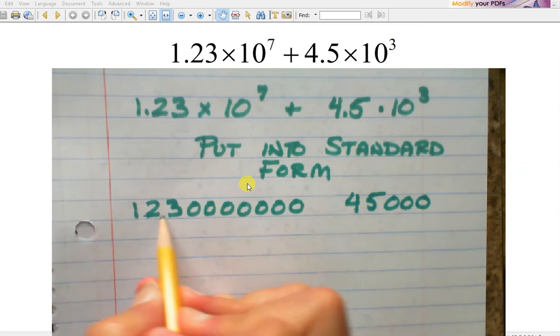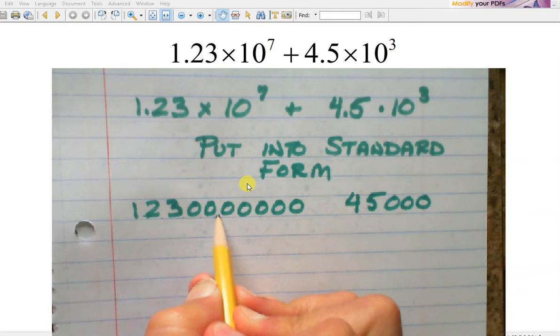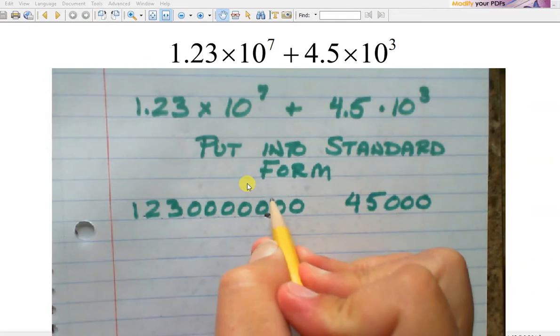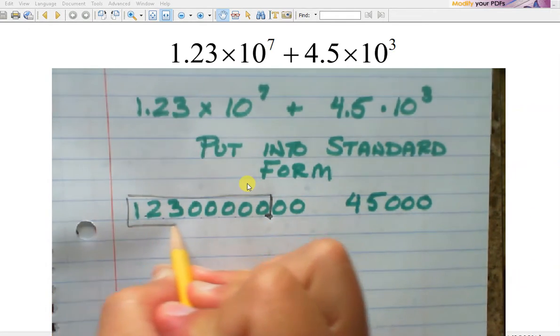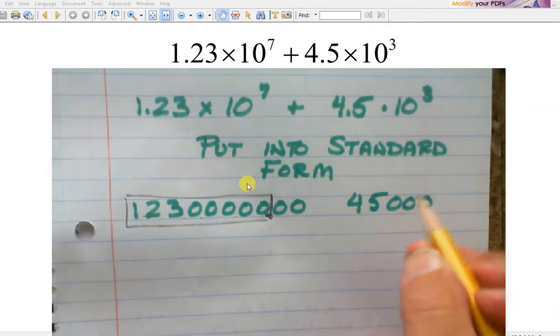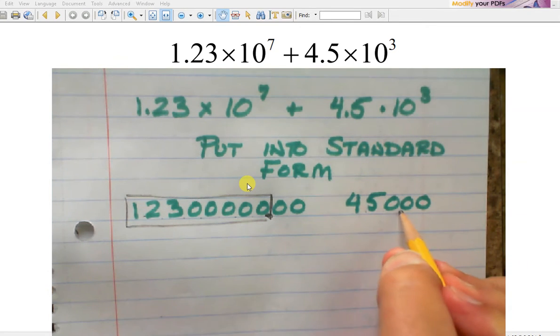Seven jumps. One, two, three, four, five, six, seven. So here's my first number right there. Three jumps. One, two, three. There's my second number right there.